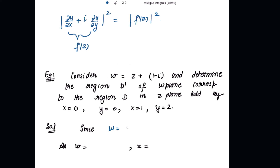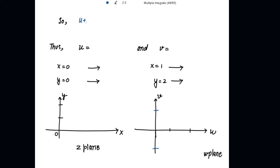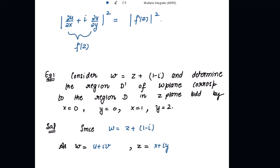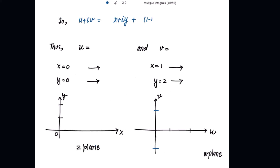Since w = z + 1 − i, and w = u + iv, z = x + iy, substituting gives: u + iv = (x + iy) + (1 − i). Solving, we get u = x + 1 and v = y − 1.